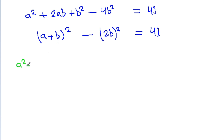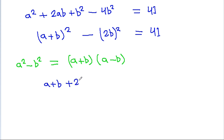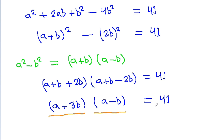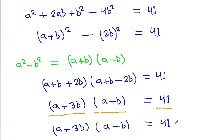Using the identity a² - b² = (a+b)(a-b), we get (a + b)² - (2b)² = (a + b + 2b)(a + b - 2b) = (a + 3b)(a - b) = 41.